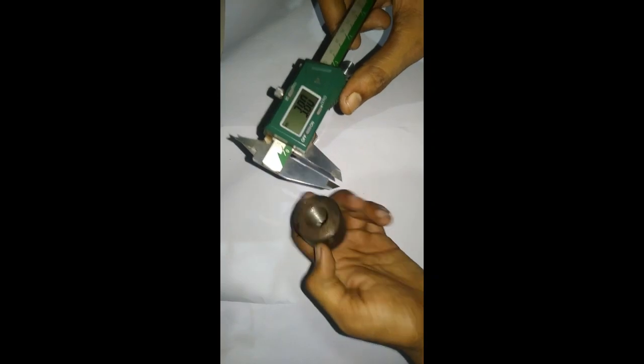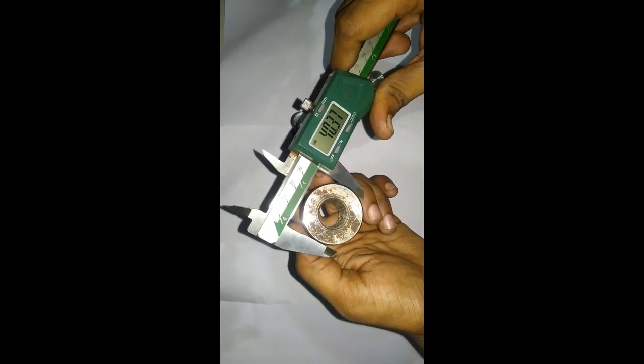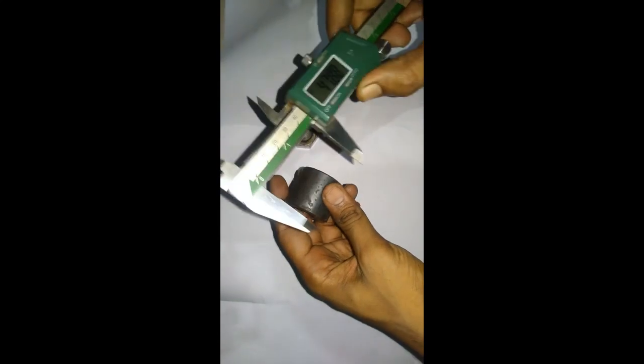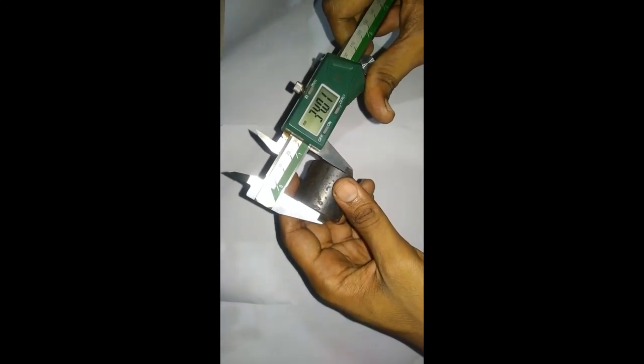If you want to measure the outer diameter of this job, we measure like this. It is 40.37. And the length of this job, we can measure like this. It is 34.